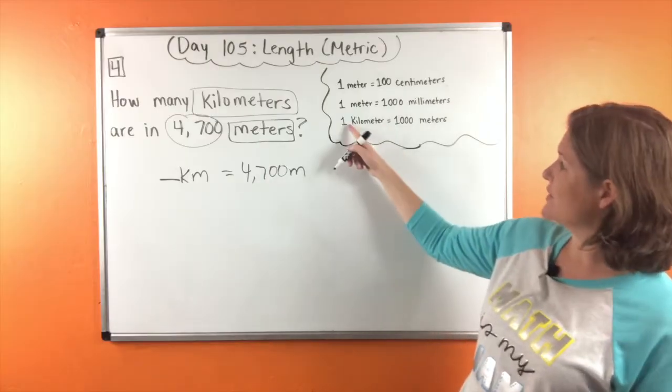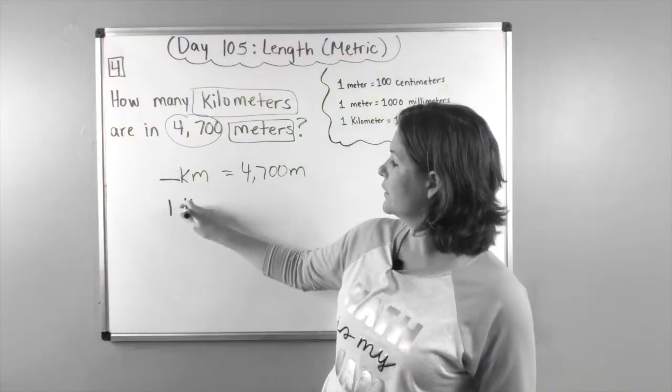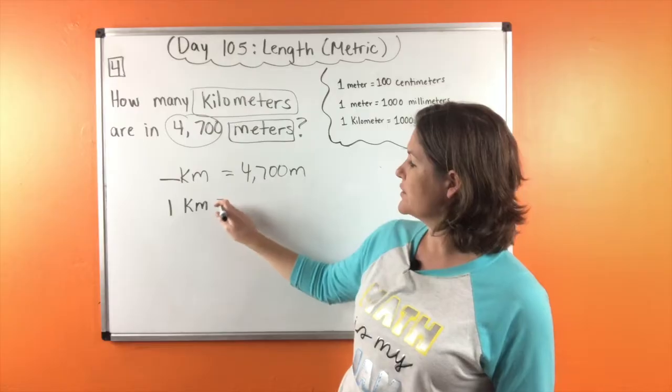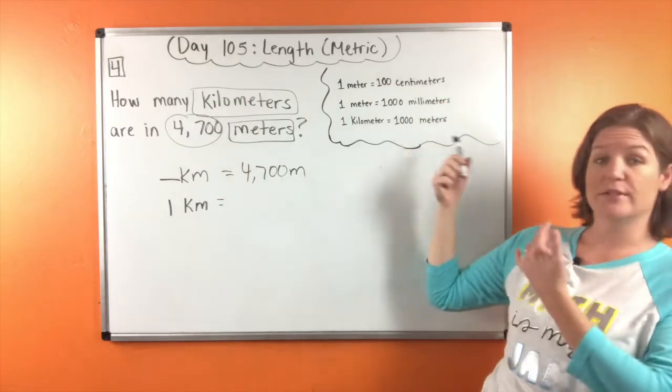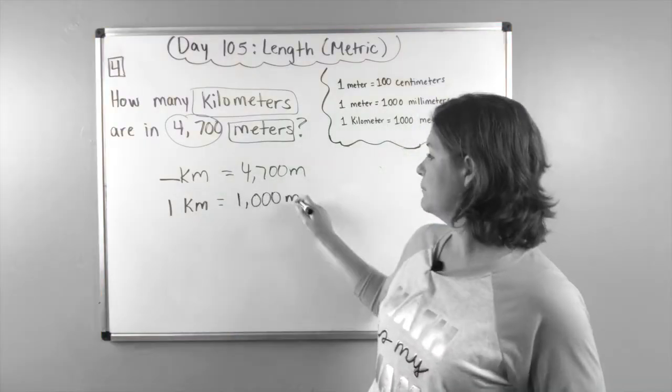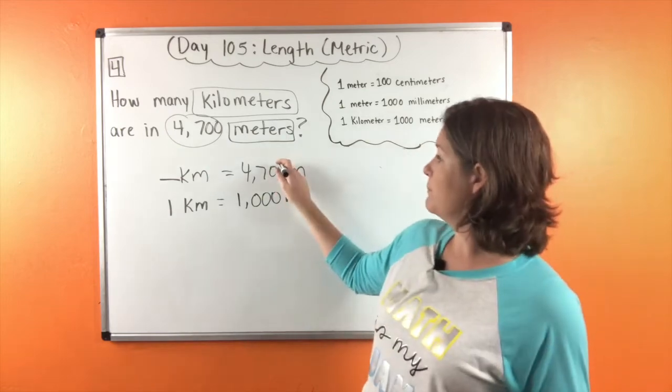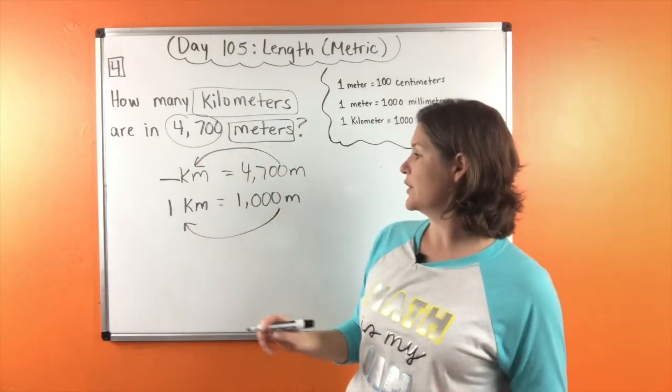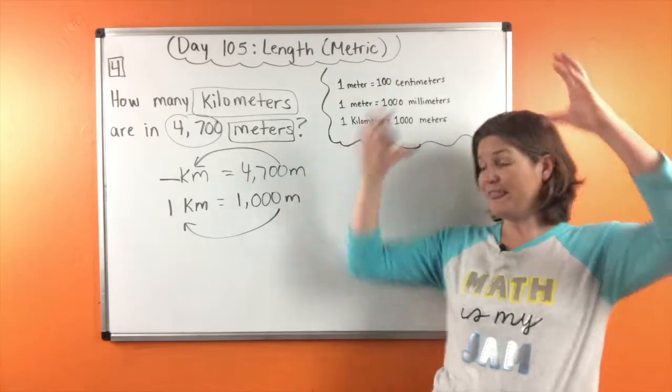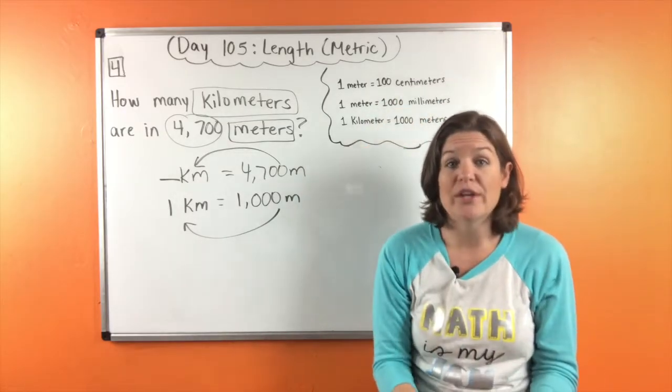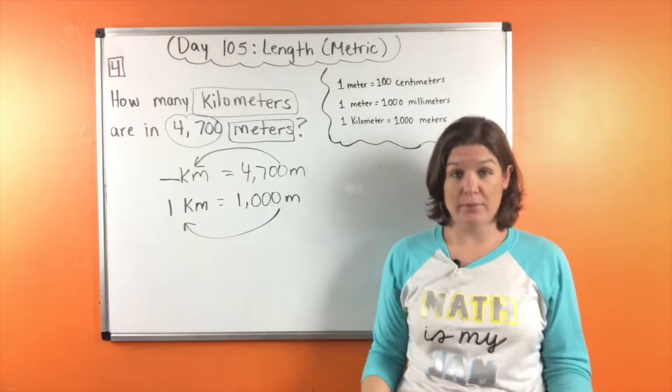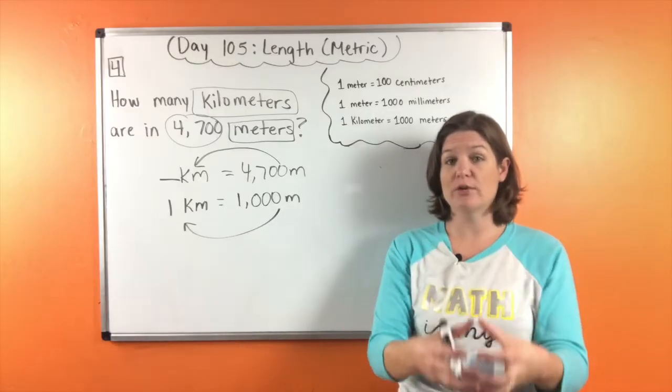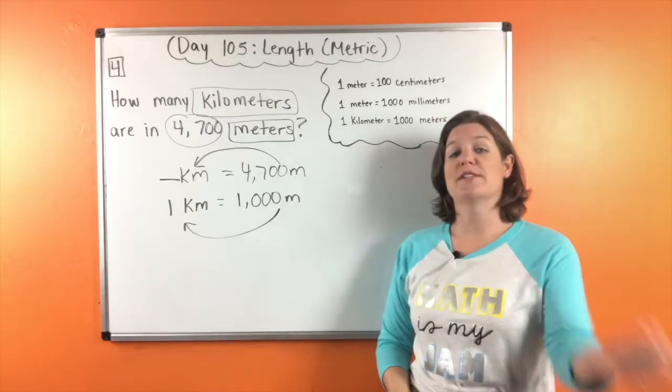Right here it says that one kilometer, so one kilometer matching up my kilometers, equals 1,000 meters. So we're going from meters to kilometers. Going from 1,000 to 1, we are actually decreasing the number. The value stays the same, but we're decreasing the number, which means that we need to divide.